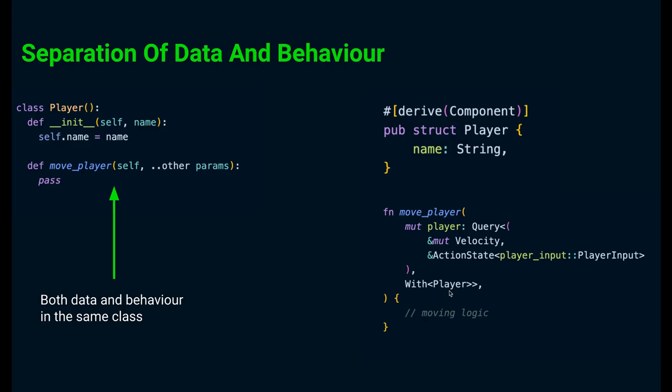A system can use a variety of components as filters and can end up reading or modifying more than one of them. Like here we are using the velocity and the player input components. This gives us a lot of flexibility in implementing game logic.